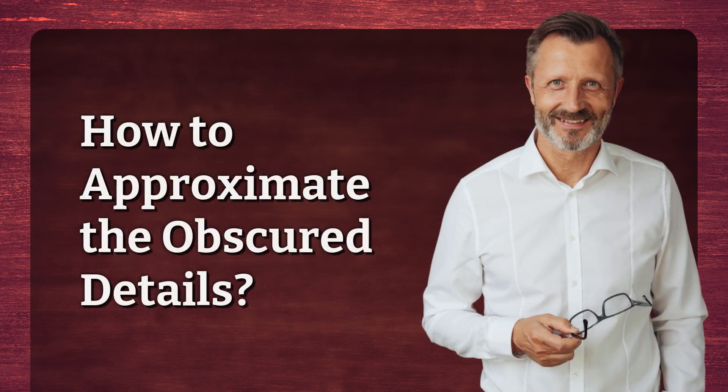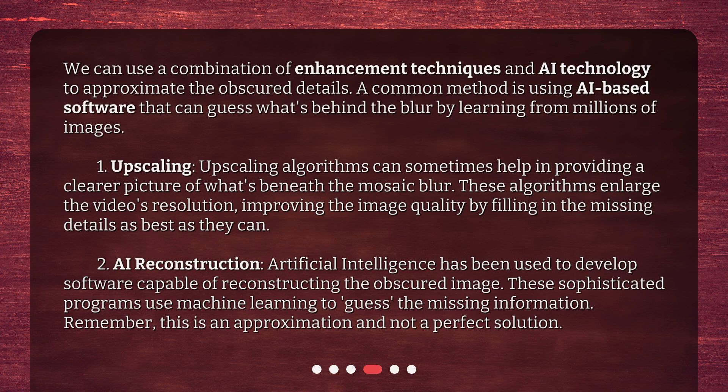How to approximate the obscured details? We can use a combination of enhancement techniques and AI technology to approximate the obscured details. A common method is using AI-based software that can guess what's behind the blur by learning from millions of images. First, upscaling algorithms can sometimes help in providing a clearer picture of what's beneath the mosaic blur — these algorithms enlarge the video's resolution, improving image quality by filling in missing details. Second, AI reconstruction: artificial intelligence has been used to develop software capable of reconstructing the obscured image, using machine learning to guess the missing information. Remember, this is an approximation and not a perfect solution.